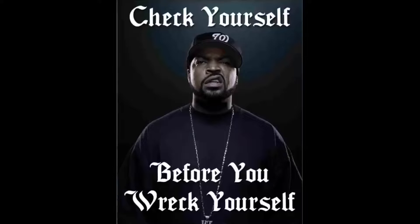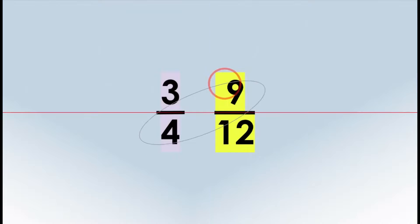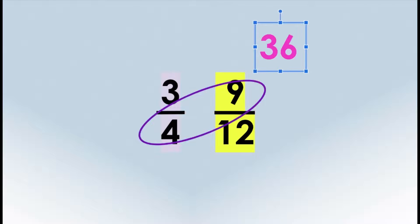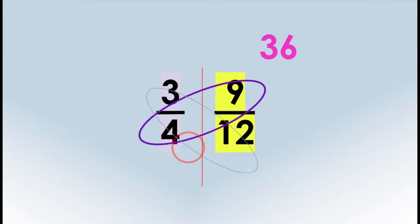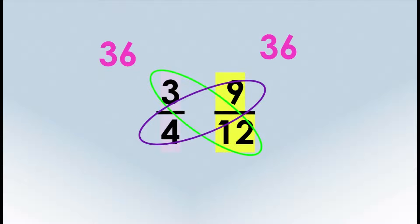Check yourself before you wreck yourself — let's use the butterfly method to see if these fractions are equivalent. Four times nine equals thirty-six, and three times twelve also equals thirty-six, so my fractions are equivalent.